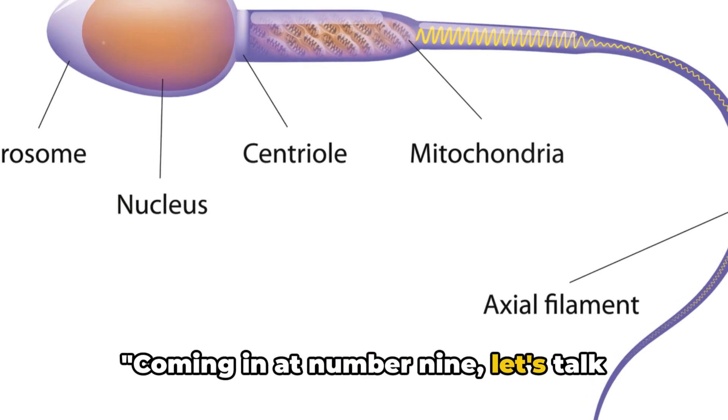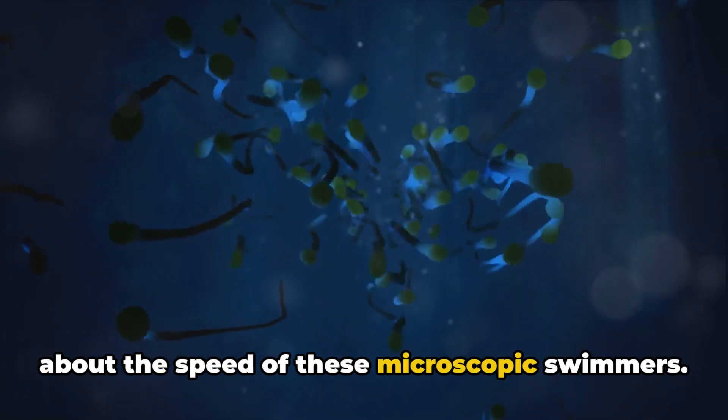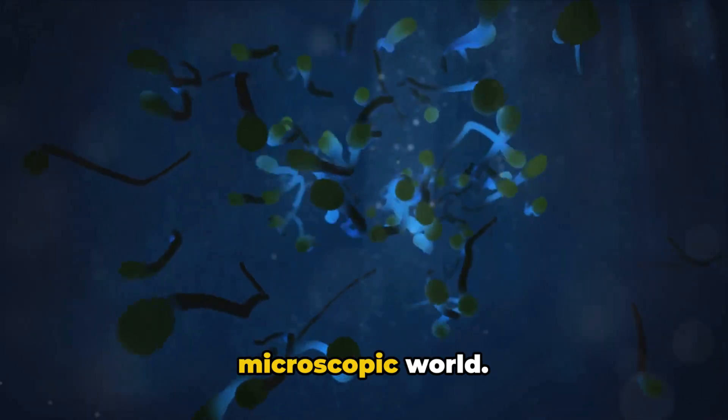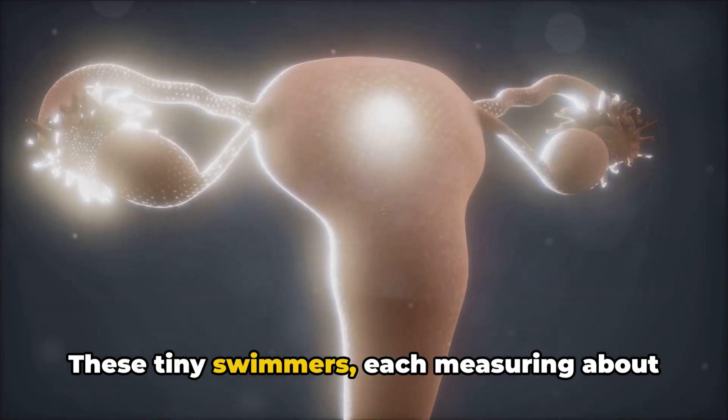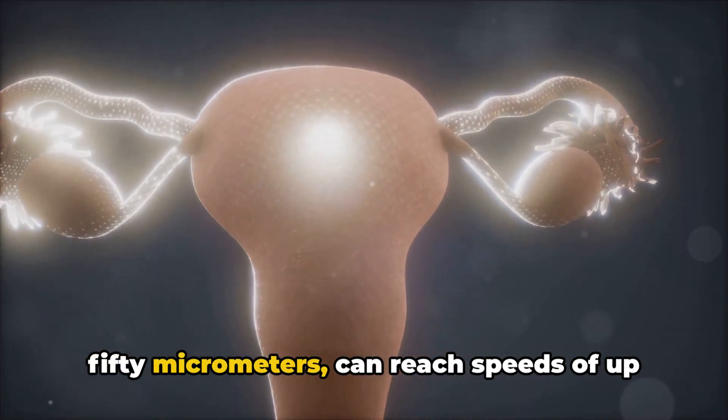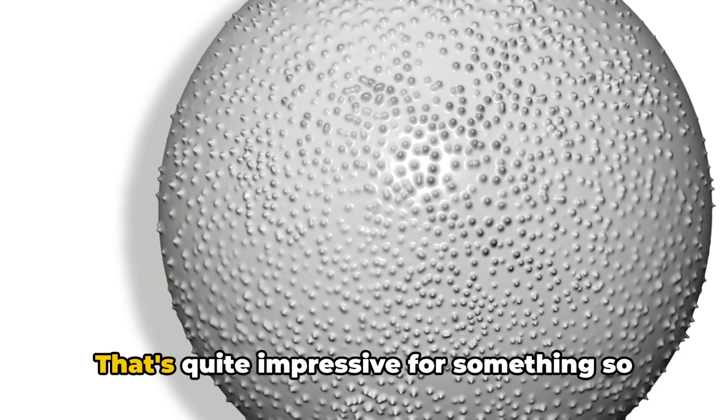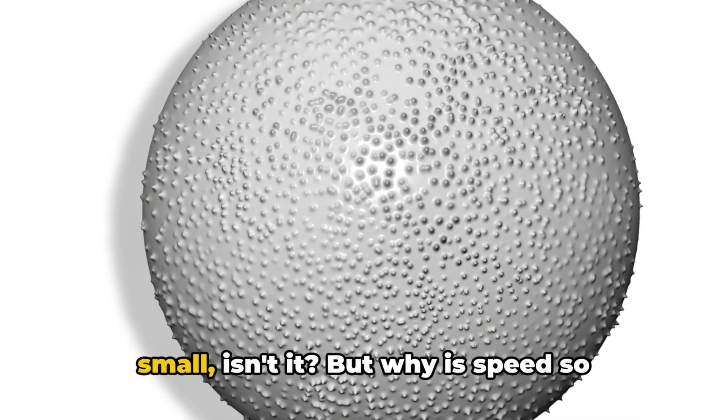Coming in at number 9, let's talk about the speed of these microscopic swimmers. Prepare to be amazed, because sperm cells are the Usain Bolts of the microscopic world. These tiny swimmers, each measuring about 50 micrometers, can reach speeds of up to 28 inches per hour. That's quite impressive for something so small, isn't it?